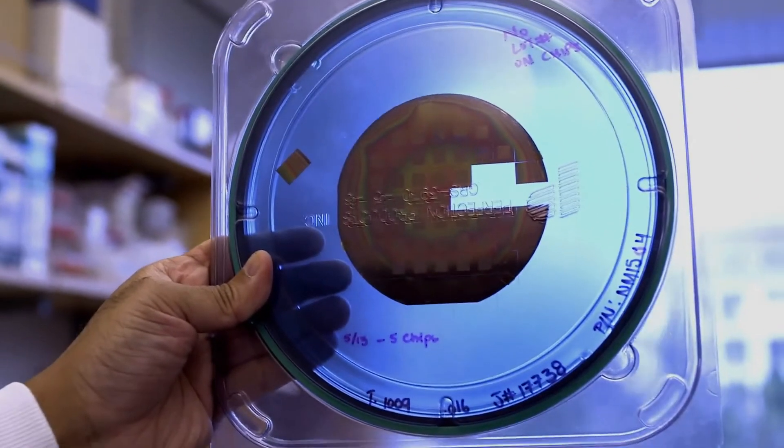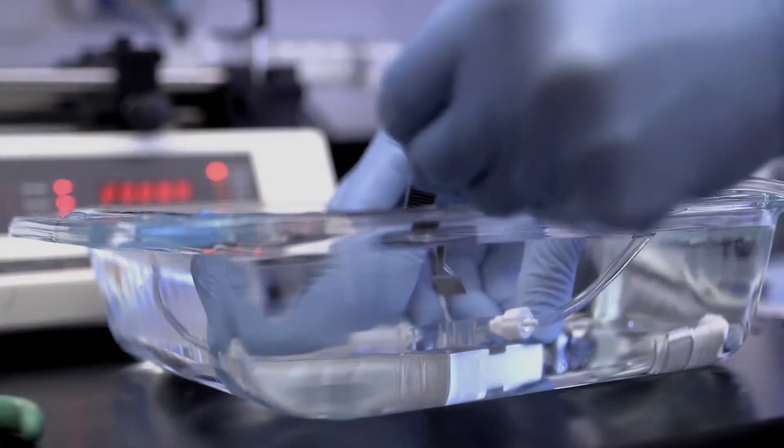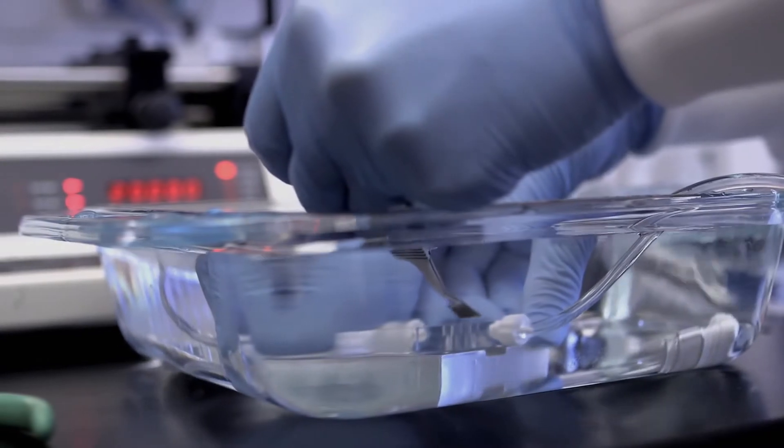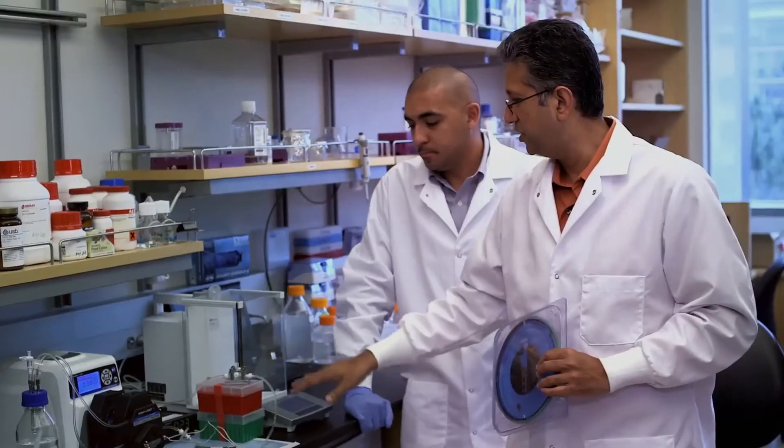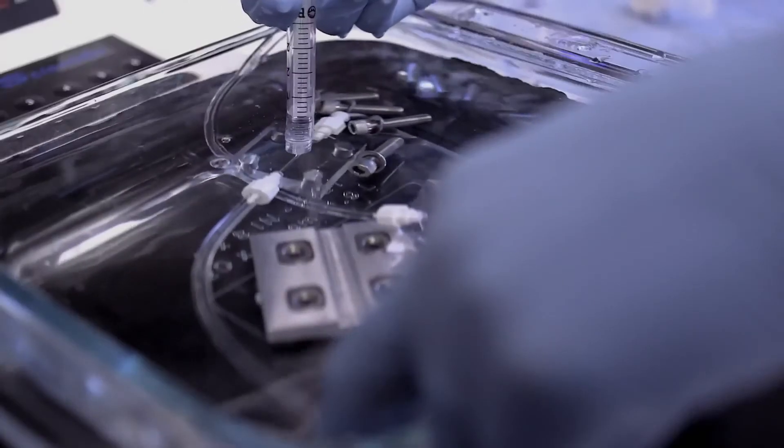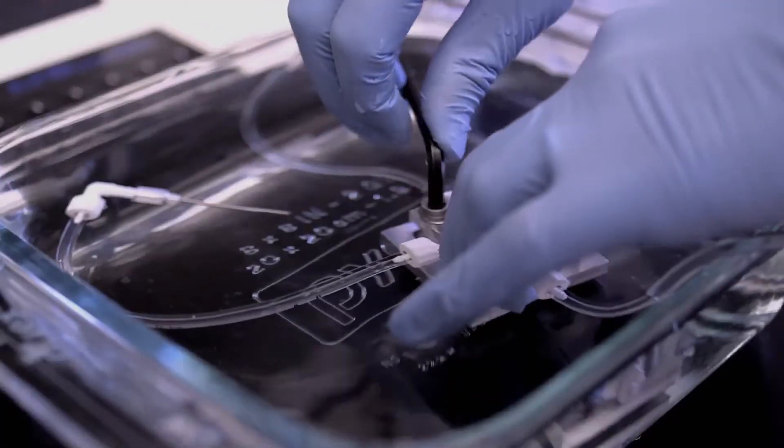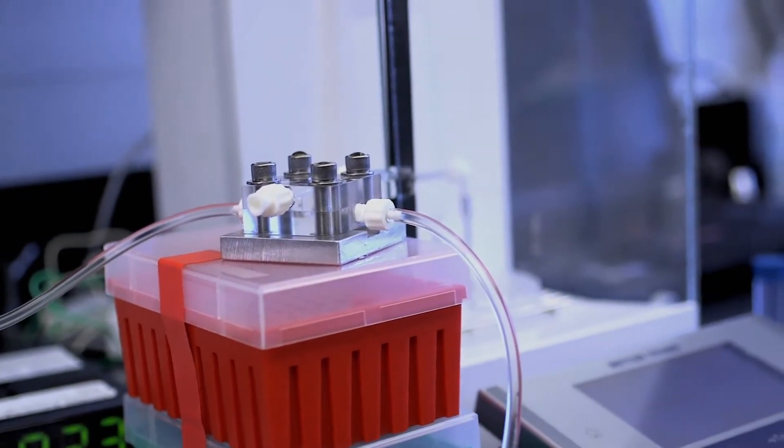So, we take these membranes, cut them into little squares, and test each of the individual membranes for how they perform in terms of filtration. We challenge it with water and very small particles in the water, and we see how much water comes out and what particles come out.